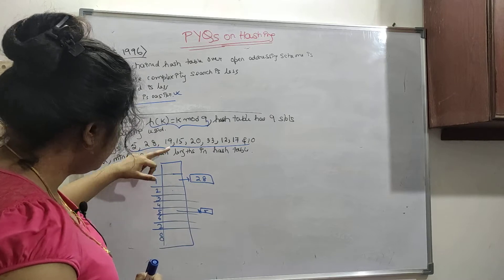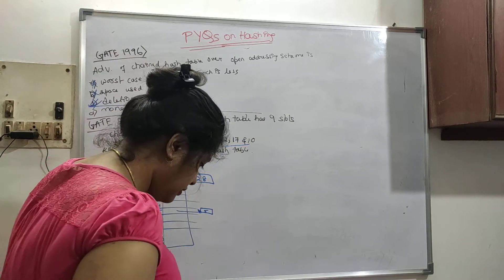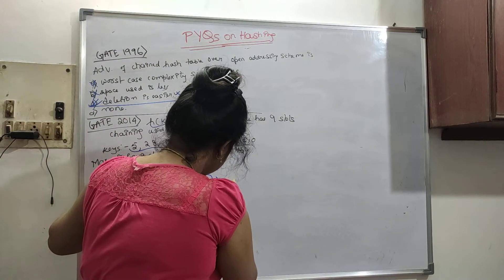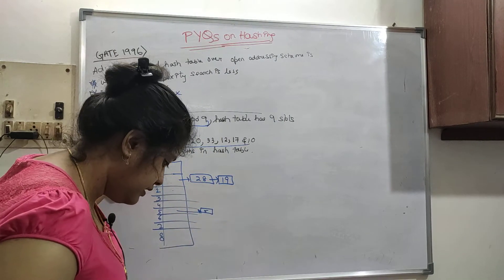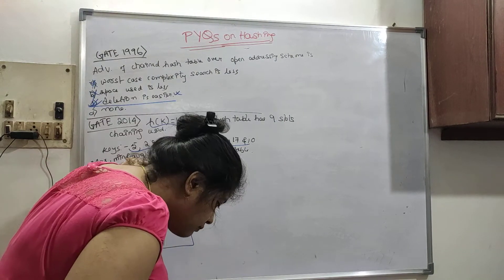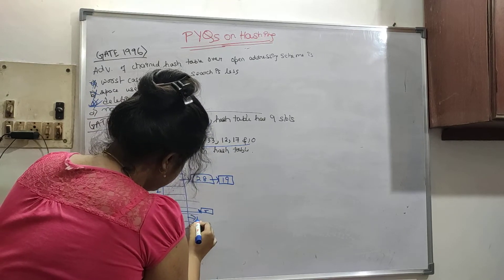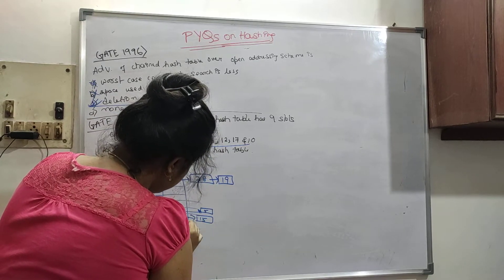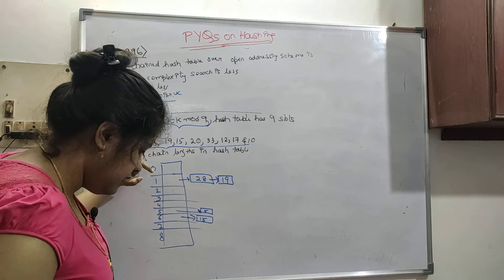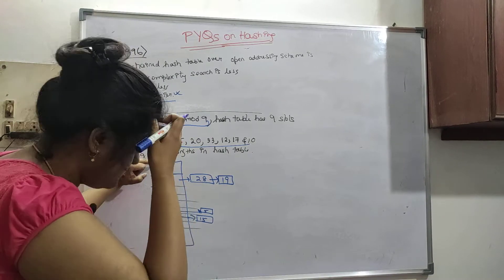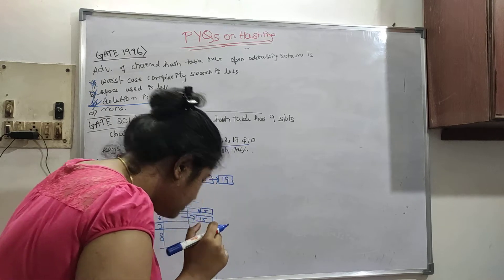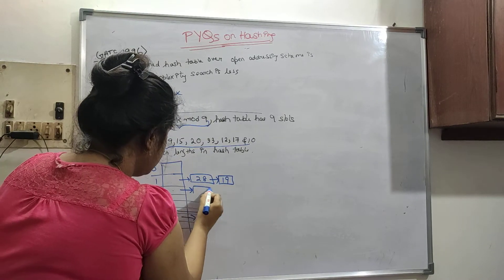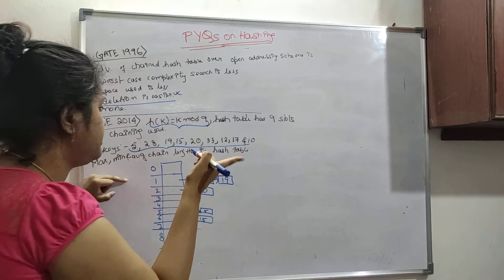I will just do this because it will take some time. Let us say, then 19, 19 will be put in here. Then 15 will be put in 6. Then 15 is there. Then next is 20. 20 is put here in 2. Yes, 18, 2.